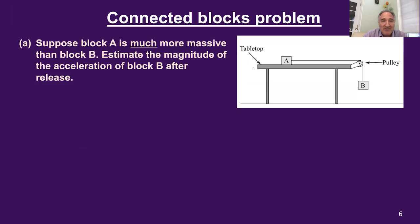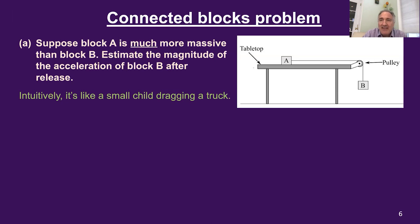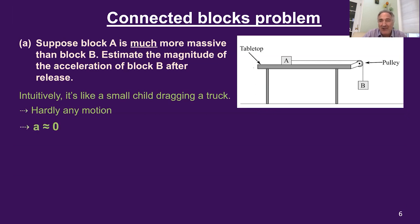Let's get into one possible solution. If block A is much more massive than B, one way to think about conceptual questions like this is to think of an analogous situation. Here block B is the dragger dragging along block A. So if block A is super massive, it's like a truck, and block B is like a small child trying to drag along a really heavy thing. With a small child dragging a truck, you expect hardly any motion — the acceleration is going to be approximately zero.